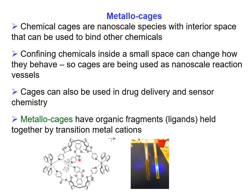We can use cages as tiny little reaction vessels and have reactants which are bound inside the cage react in a totally different way. Or we can use cages for delivery — transporting molecules from one place to another for drug delivery — or we can use them as a sensor. This cage I'm showing here is fluorescent; when we shine a light on it, it glows blue. If this cage bound a particular substrate and turned that fluorescence off, that gives you a signal to tell you that particular compound is present and being bound in this environment.